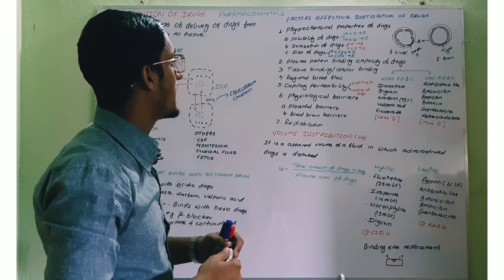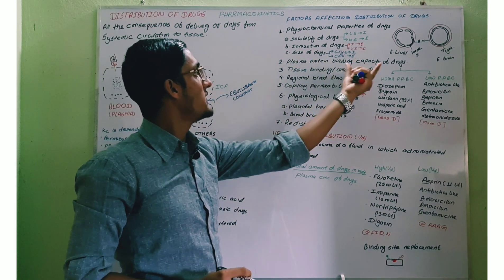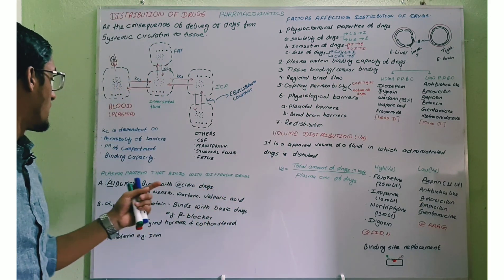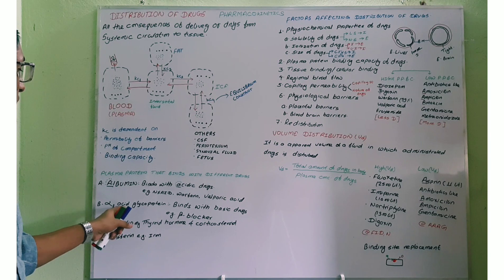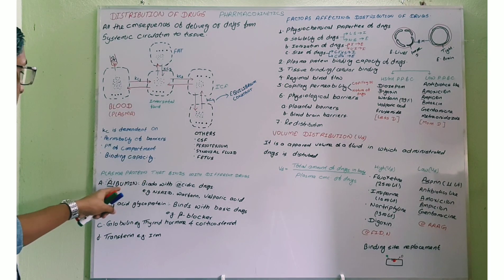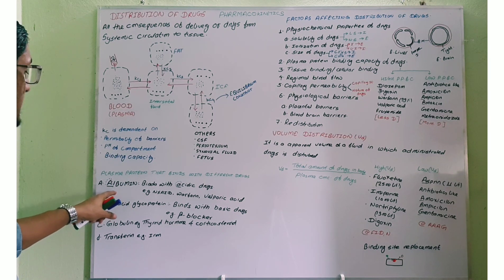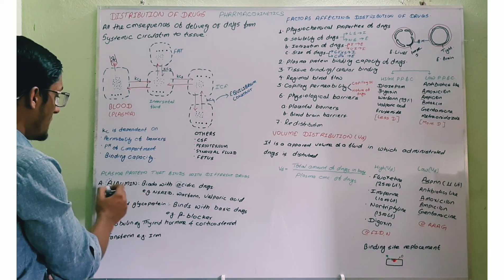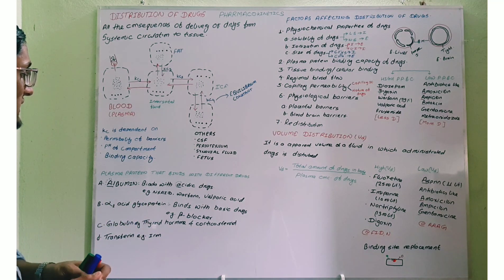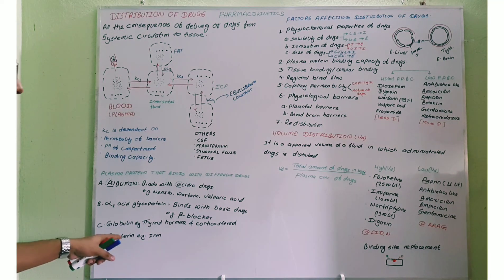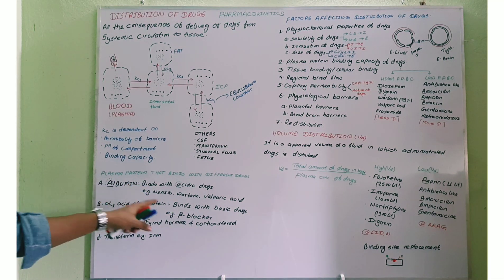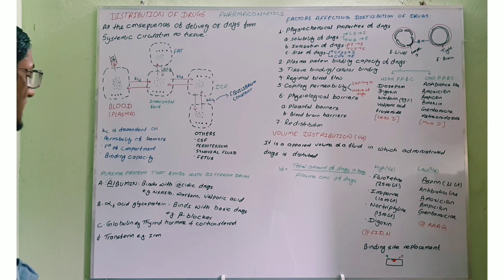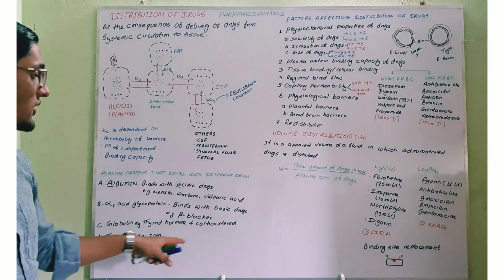Now comes plasma protein binding capacity of the drug — that is, the affinity of the drug that binds with plasma protein. The plasma proteins are albumin, globulin, transferrin, and alpha-1 acid glycoprotein. Remember: albumin mainly binds with acidic drugs — albumin, acidic drug, both start with 'A' — examples include NSAIDs, warfarin, and valproic acid. Basic drugs bind with alpha-1 acid glycoprotein, like beta-blockers. Globulin binds with thyroid hormone and corticosteroids.